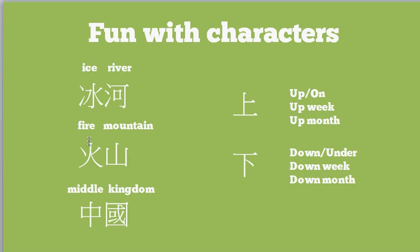Here's a character for 'fire.' Here's a character for 'mountain' — this one kind of looks like a mountain. You put fire and mountain together and you get the word — can you guess? Volcano. Which is like a fire mountain.